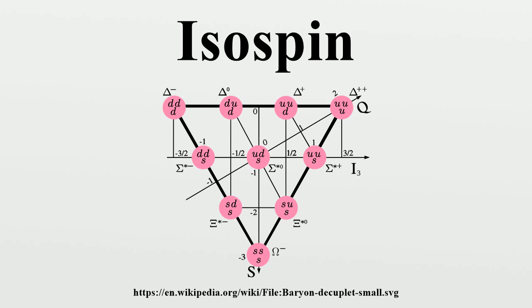Isospin is similar to, but should not be confused with, weak isospin. Weak isospin is the gauge symmetry of the weak interaction, which connects quark and lepton doublets of left-handed particles in all generations — for example, up and down quarks, top and bottom quarks, electrons and electron-neutrinos. By contrast, isospin connects only up and down quarks, acts on both chiralities, and is a global symmetry. Attempts have been made to promote isospin from a global to a local symmetry.